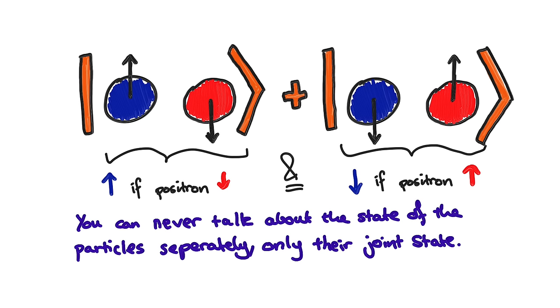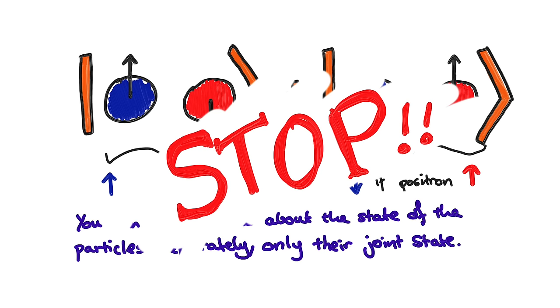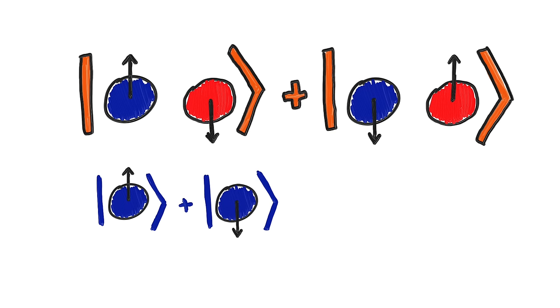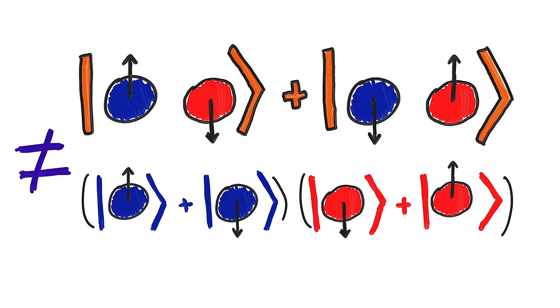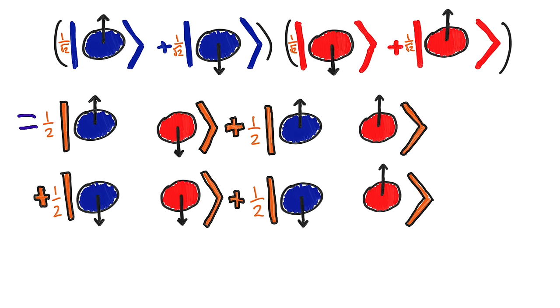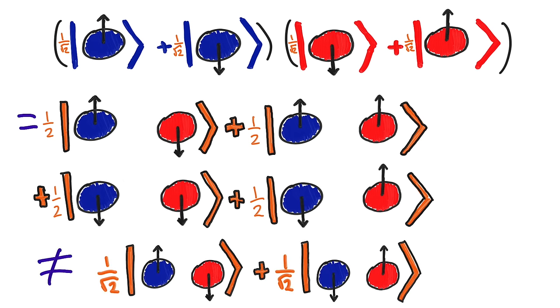But you might have an objection to this. Can't you say that the electron state is a superposition of up and down? Well there are two ways to show that this isn't the state of the electron. The first is just mathematically showing that these two states aren't equal, but that's a little bit boring. So instead, let's see that this would lead to a contradiction.